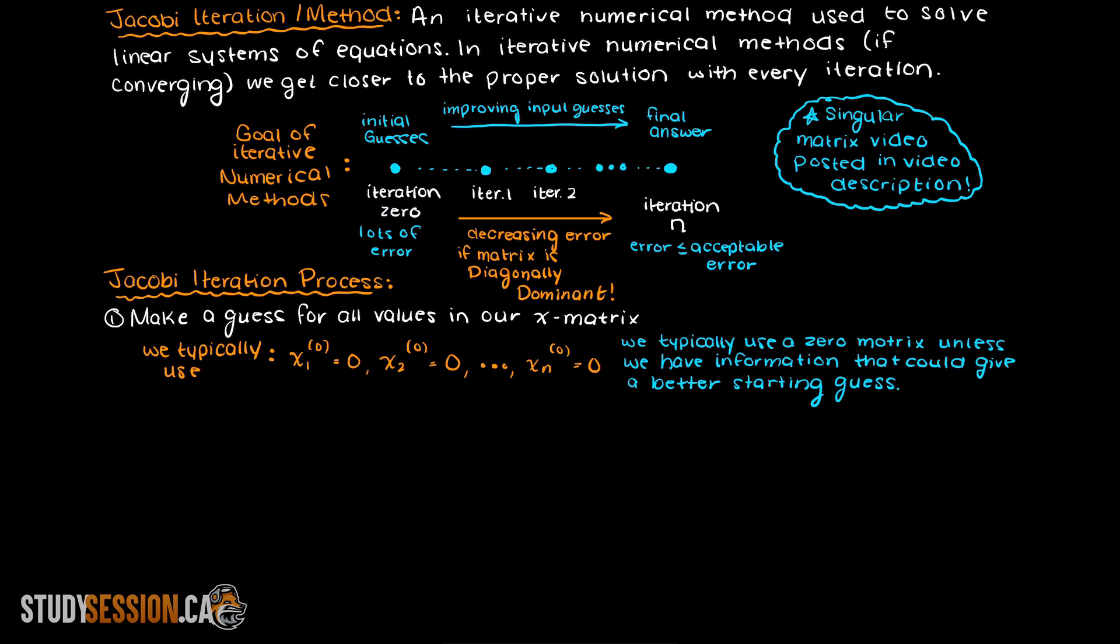A typical starting guess is just a 0 matrix, unless we have some additional information about the problem that could help our guess. The benefits of having a better starting guess is that we can achieve our final solution in less iterations.